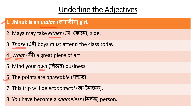Number 6: The points are agreeable. 'Agreeable' is the term. This means the points are agreeable - 'agreeable' is the adjective, and 'points' is the noun. Number 7: This trip will be economical. The trip will be economical - the term is 'economical', which is the adjective.